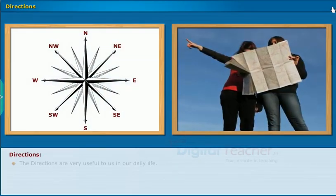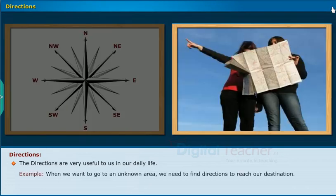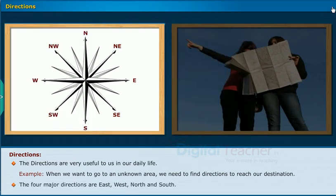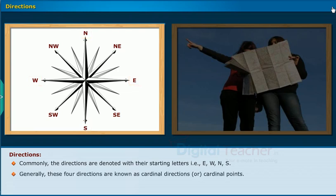Directions are very useful to us in our daily life. For example, when we want to go to an unknown area, we need to find directions to reach our destination. The four major directions are East, West, North, and South. Commonly, directions are denoted with their starting letters: E, W, N, S. These four directions are generally known as cardinal directions or cardinal points.